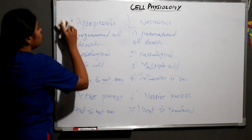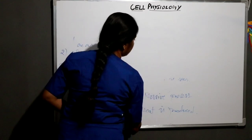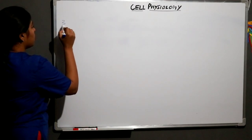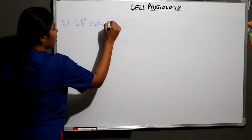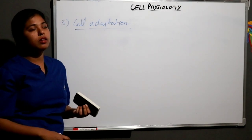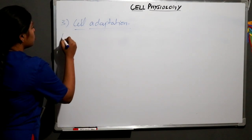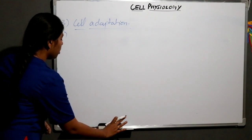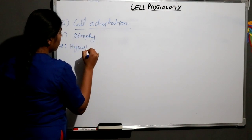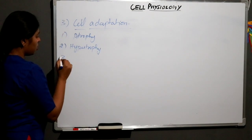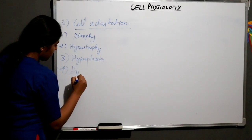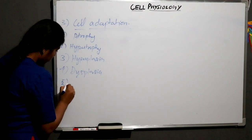We have finished our second topic. Now we will go to the third topic: cell adaptation. Adaptation is defined as the changing of a substance according to its surroundings. There are five types of cell adaptation: first, atrophy; second, hypertrophy; third, hyperplasia; fourth, dysplasia; and fifth, metaplasia.